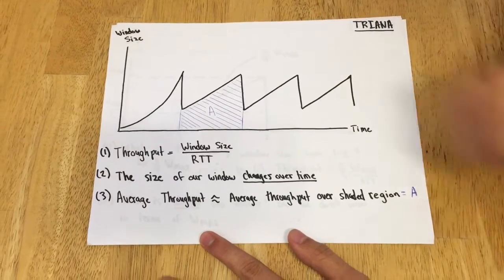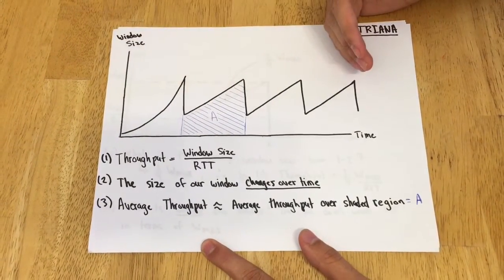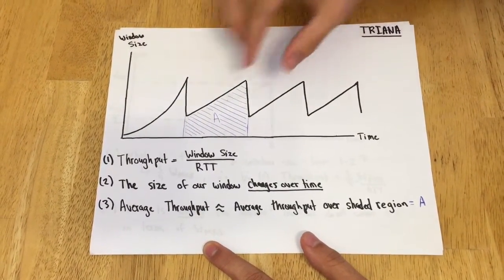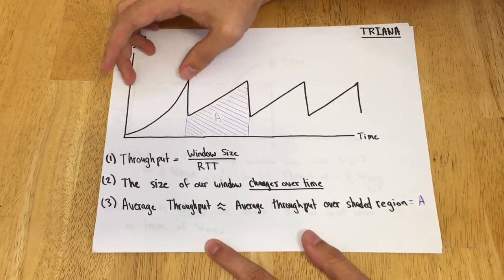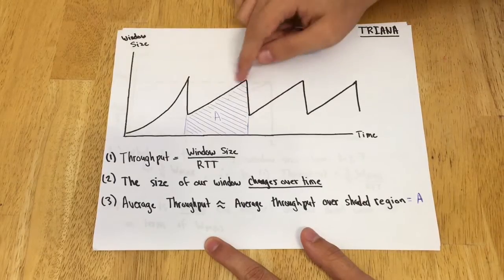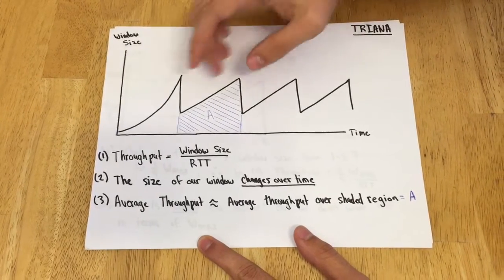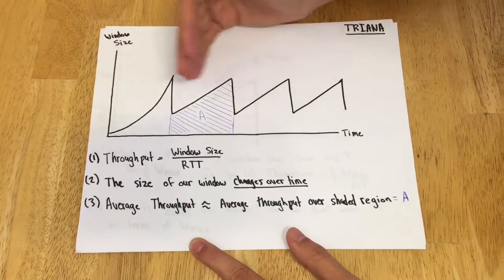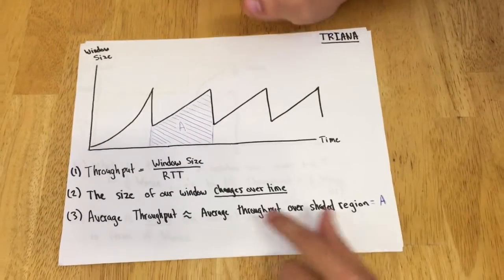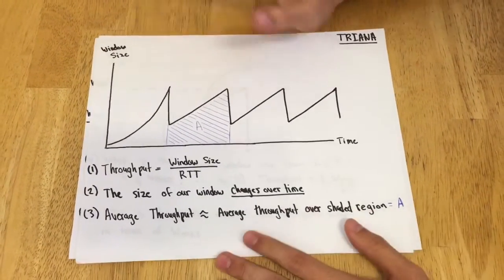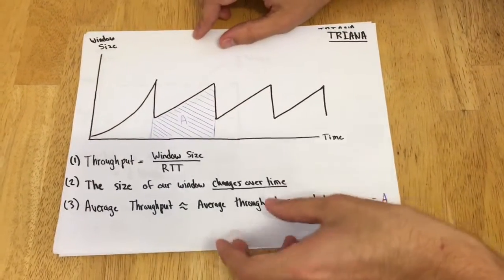Another really important thing to notice is that the average throughput over this entire function is very similar to the throughput over this shaded area. If we ignore slow start, a single sawtooth has roughly the same throughput as the entire function. So for simplicity, we're just going to look at a single sawtooth.